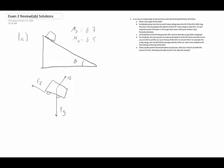We're going to use a coordinate system for angled problems where x and y are aligned with the slope. Since nothing's moving, energy won't work here — there's no energy change happening. This is going to be a force-type problem, so let's do our sum of forces in the y direction first.